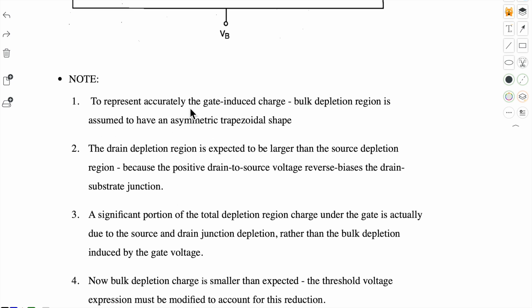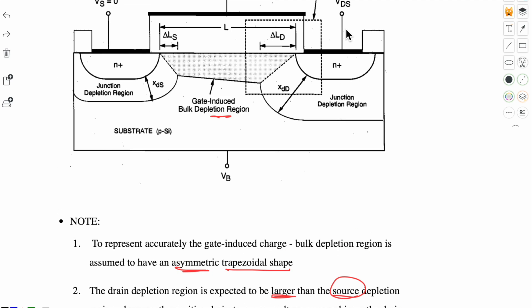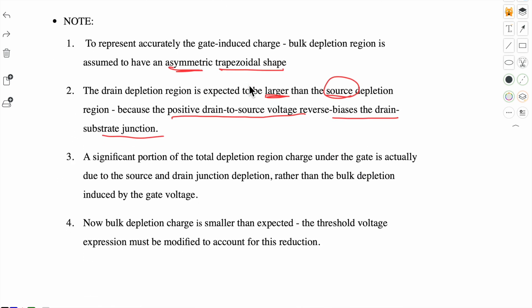First, to represent accurately the gate-induced charge bulk depletion region is assumed to have an asymmetric trapezoidal shape. Why asymmetric? The drain depletion region is expected to be larger than the source depletion region because the positive drain-to-source voltage reverse biases the drain-substrate junction. So the more positive voltage you apply at the drain terminal compared to source, the more reverse biasing there will be and the depletion region will keep growing. That's why it's asymmetric.